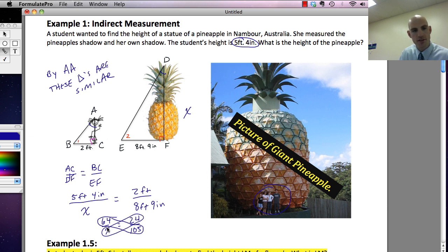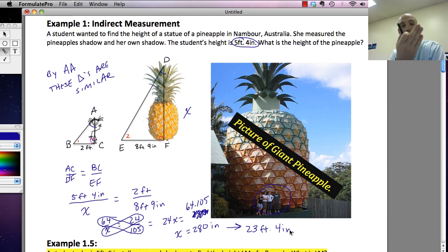One of the hardest skills to master with similar triangles is dealing with which ratios go with which. So when we solve this, we get 24X equals, oops, no, that's the final answer. 24X equals 64 times 105. And so X is going to be equal to 280 inches. And that's 23 feet 4 inches when we divide by 12. That's a method of indirect measurement. So all we did was we set up the shadow to the height and we use that ratio to try to figure out what the height of the pineapple was.